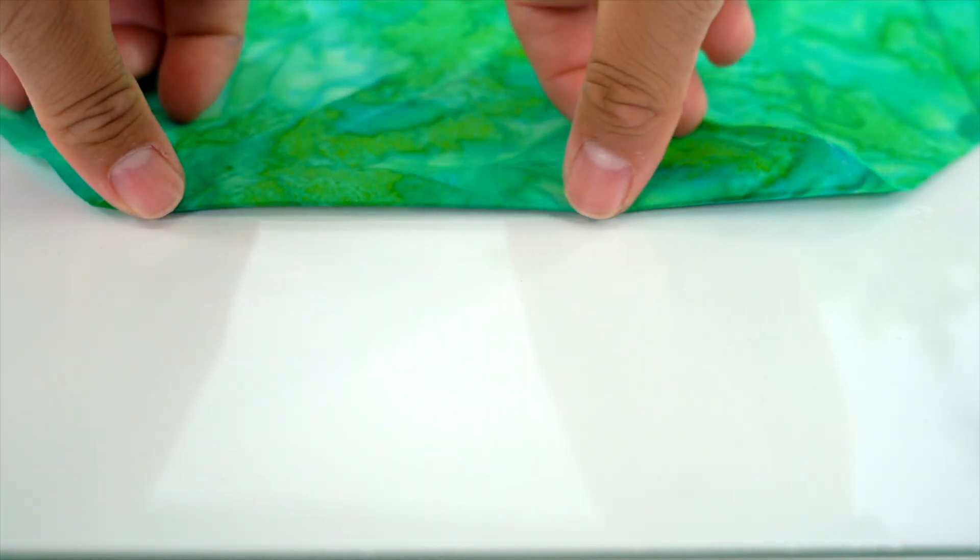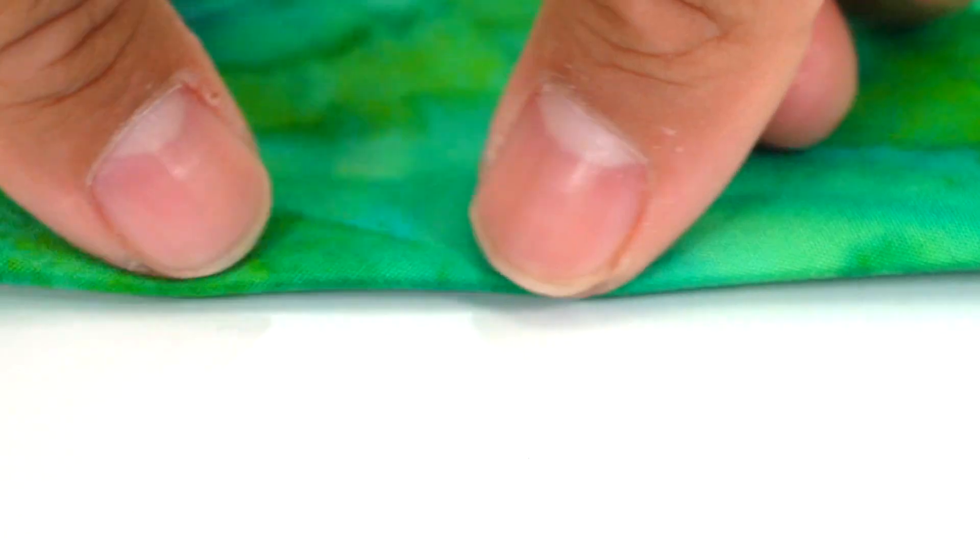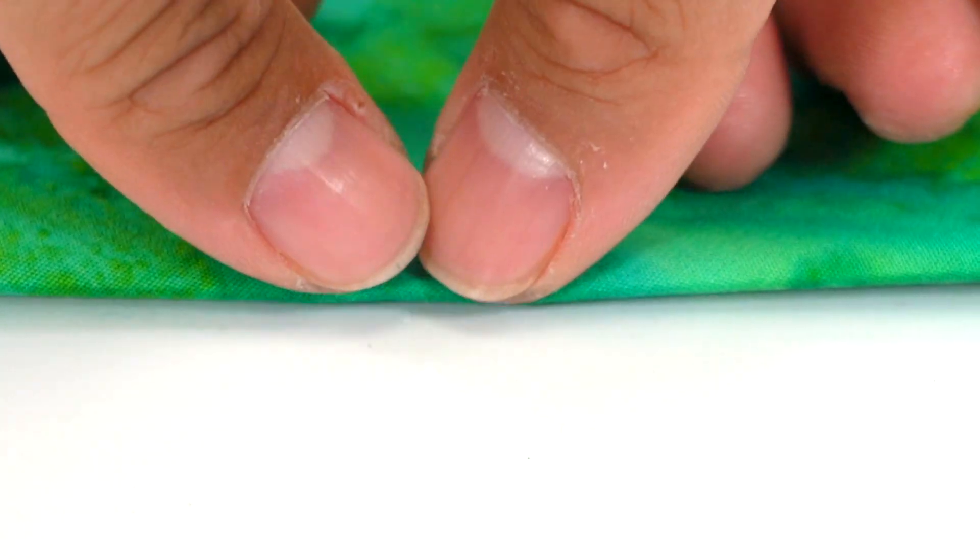Seams can be pressed open at our sewing station simply by drawing a line along the seam and then finger pressing the seam open.